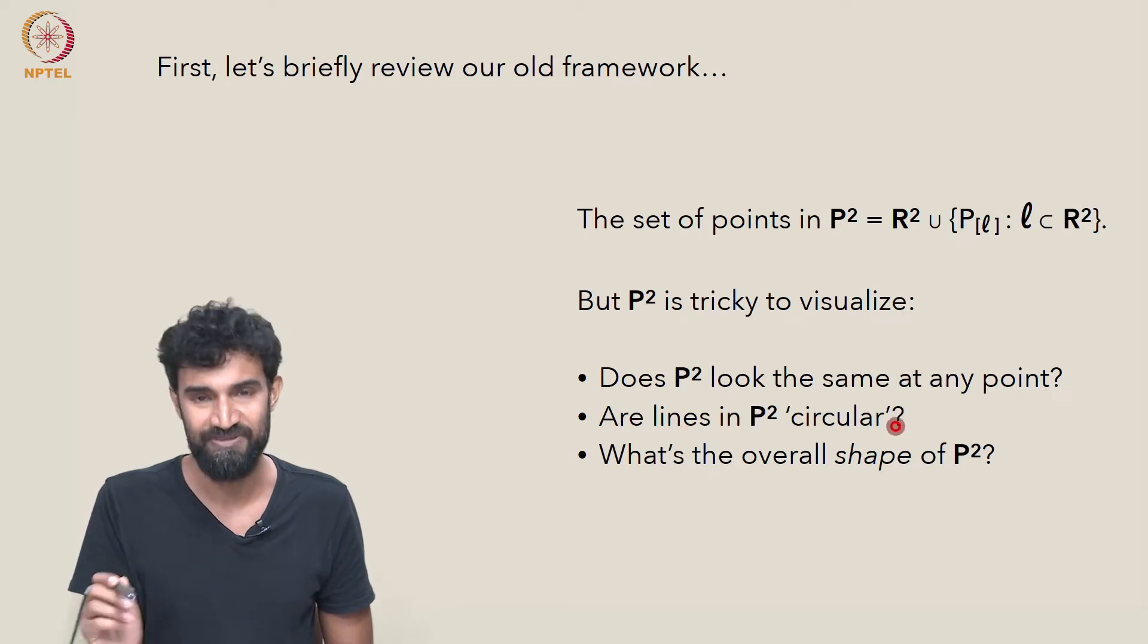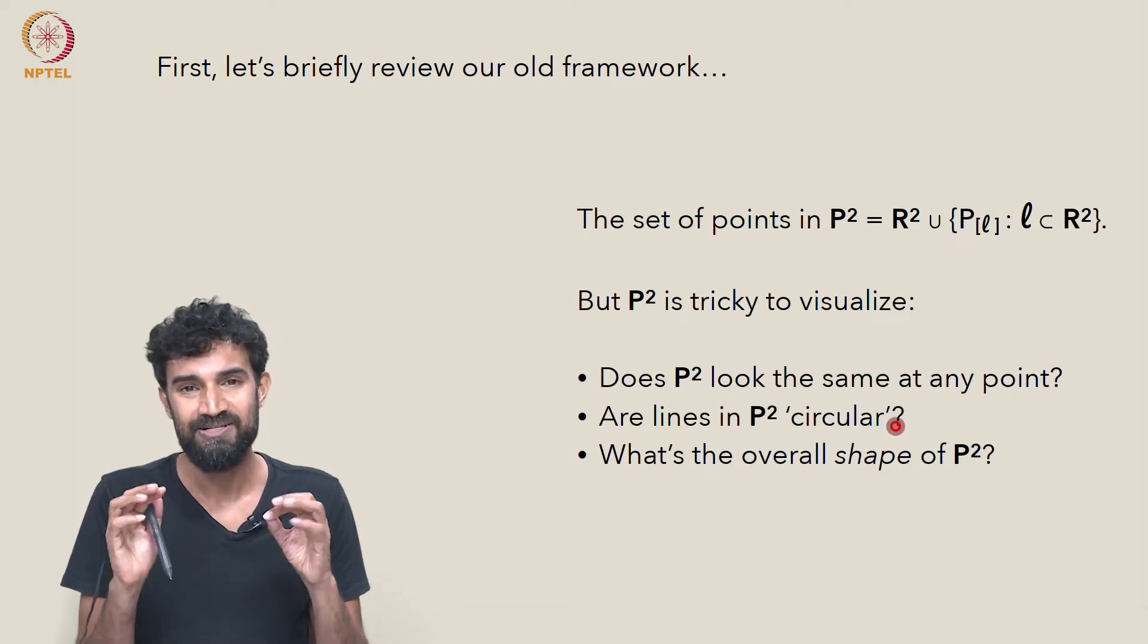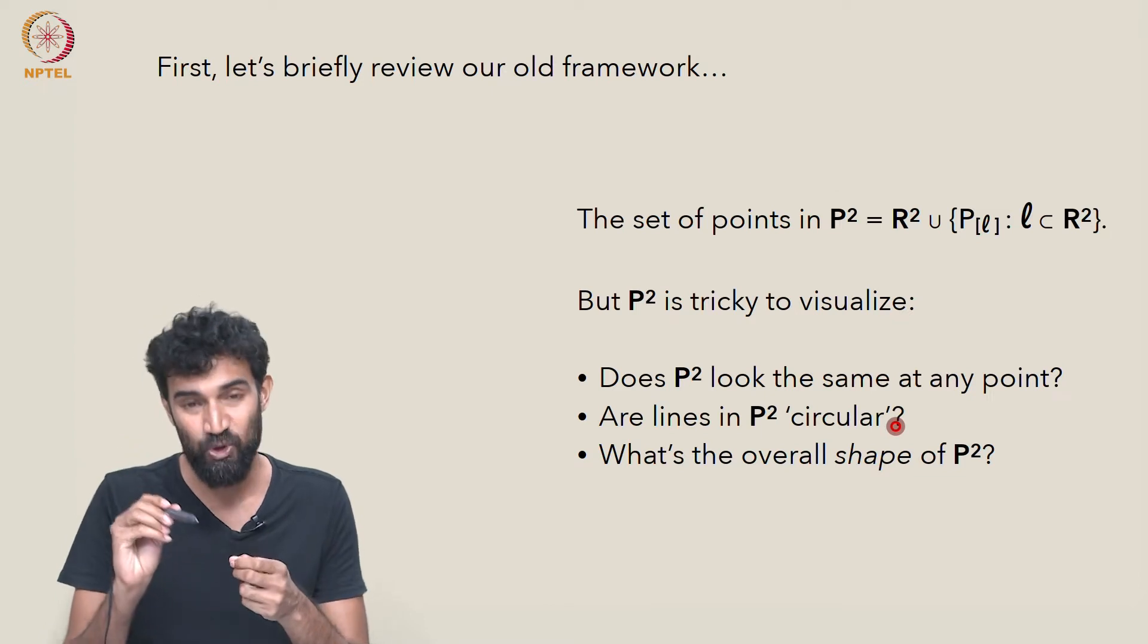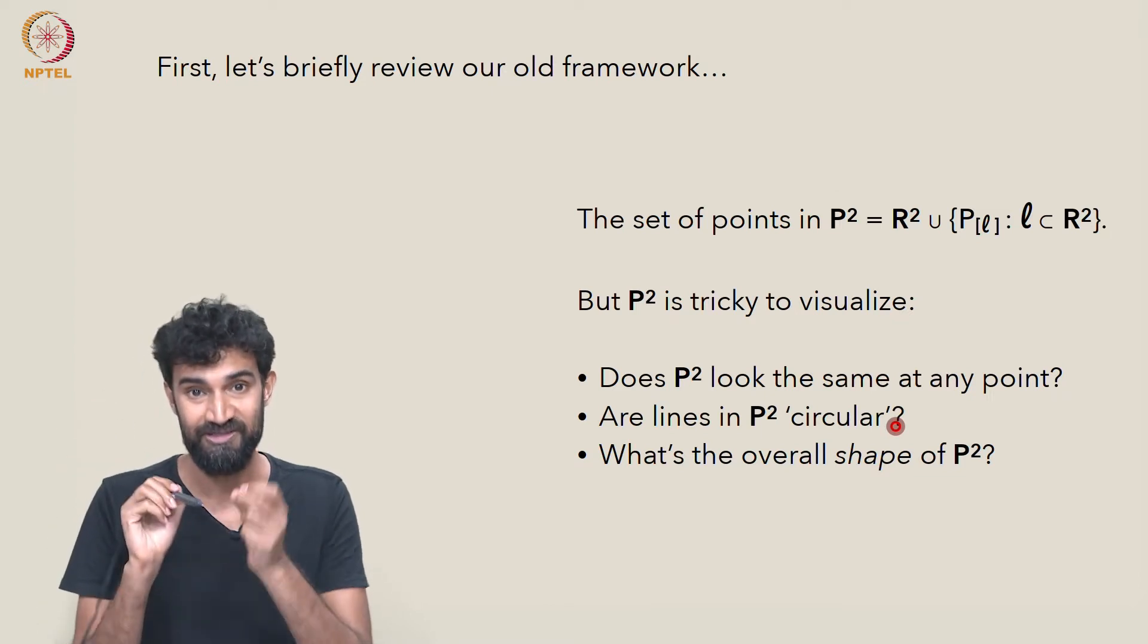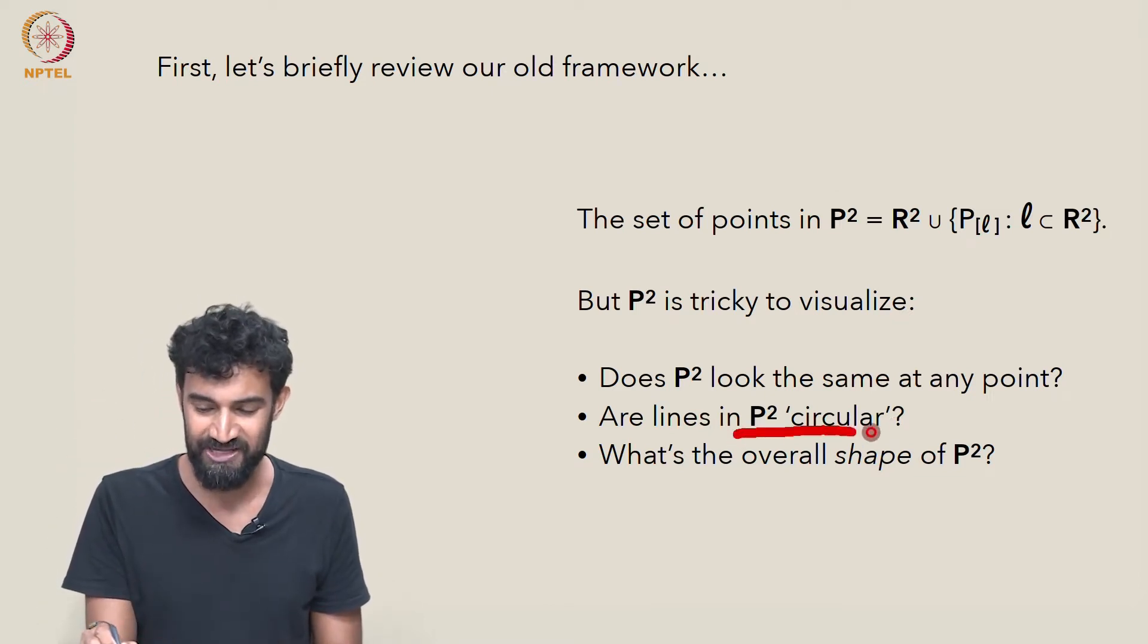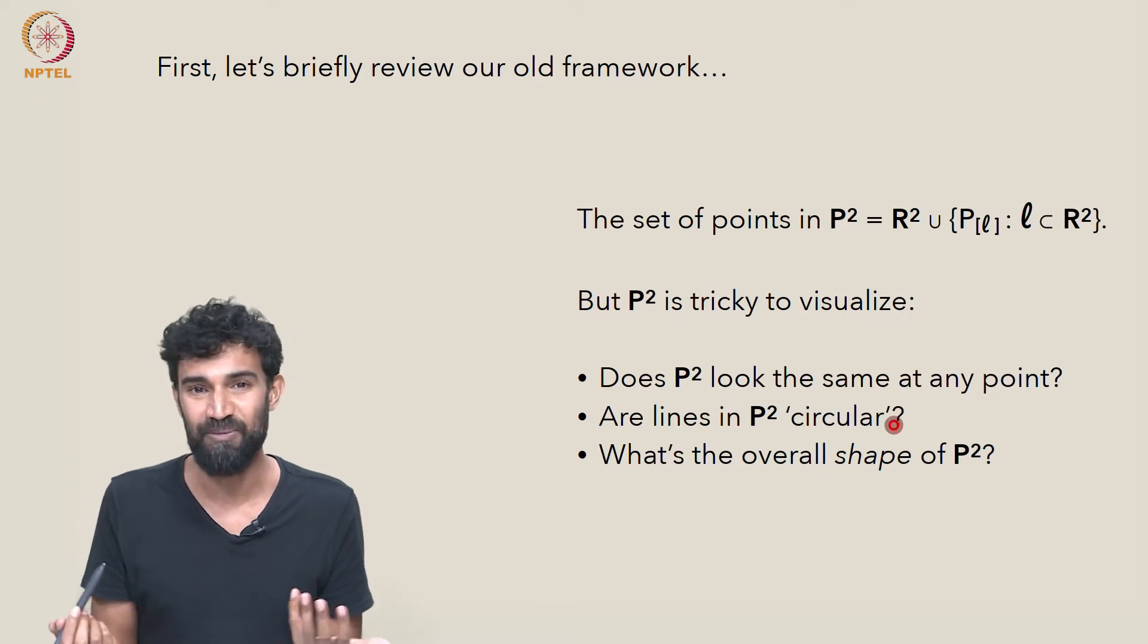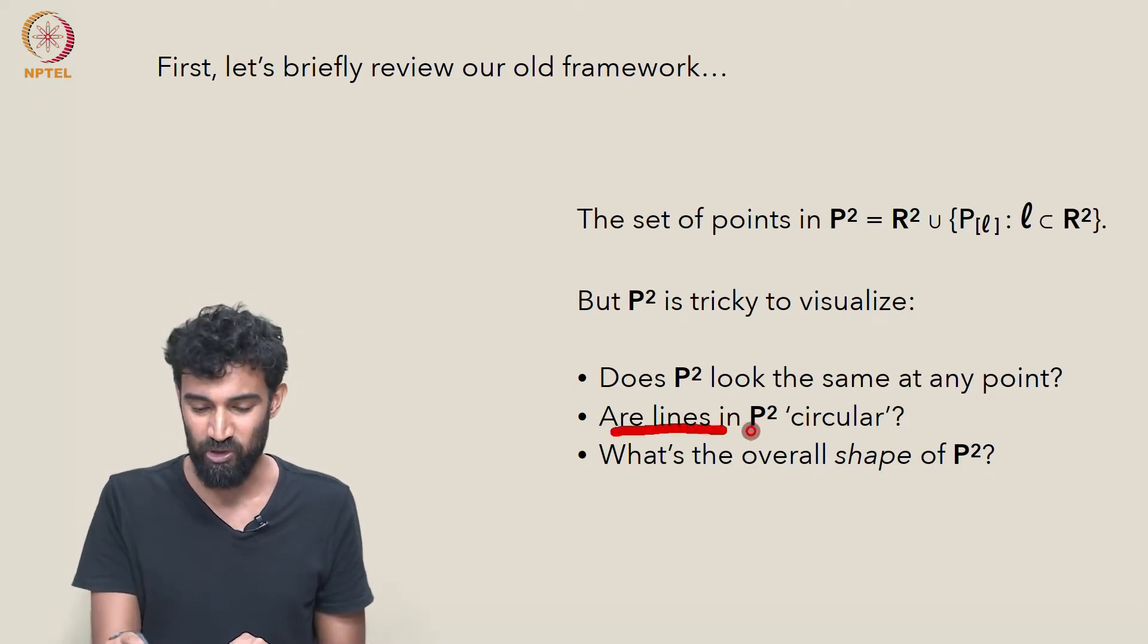A second question is about the lines in P². We saw that they're kind of circularish, like if you keep going in one direction, you come back to where you started. So to what extent are they circular? Do they have other geometric properties of circles? What more can we say?